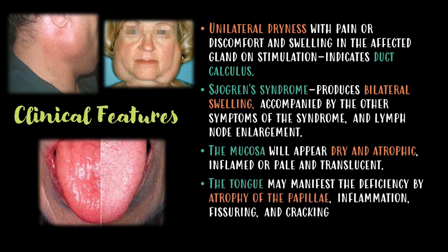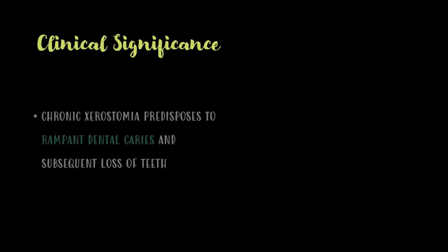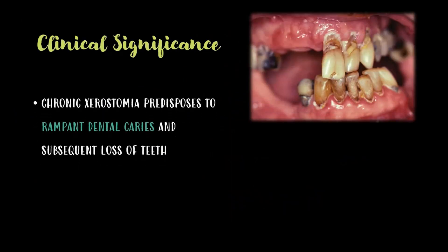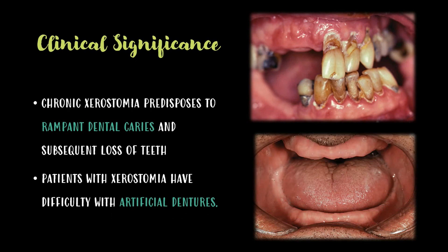The tongue may manifest deficiency by atrophy of the papillae, inflammation, fissuring, and cracking. Chronic xerostomia predisposes to rampant dental caries and subsequent loss of teeth. Patients with xerostomia also have difficulty with artificial dentures.